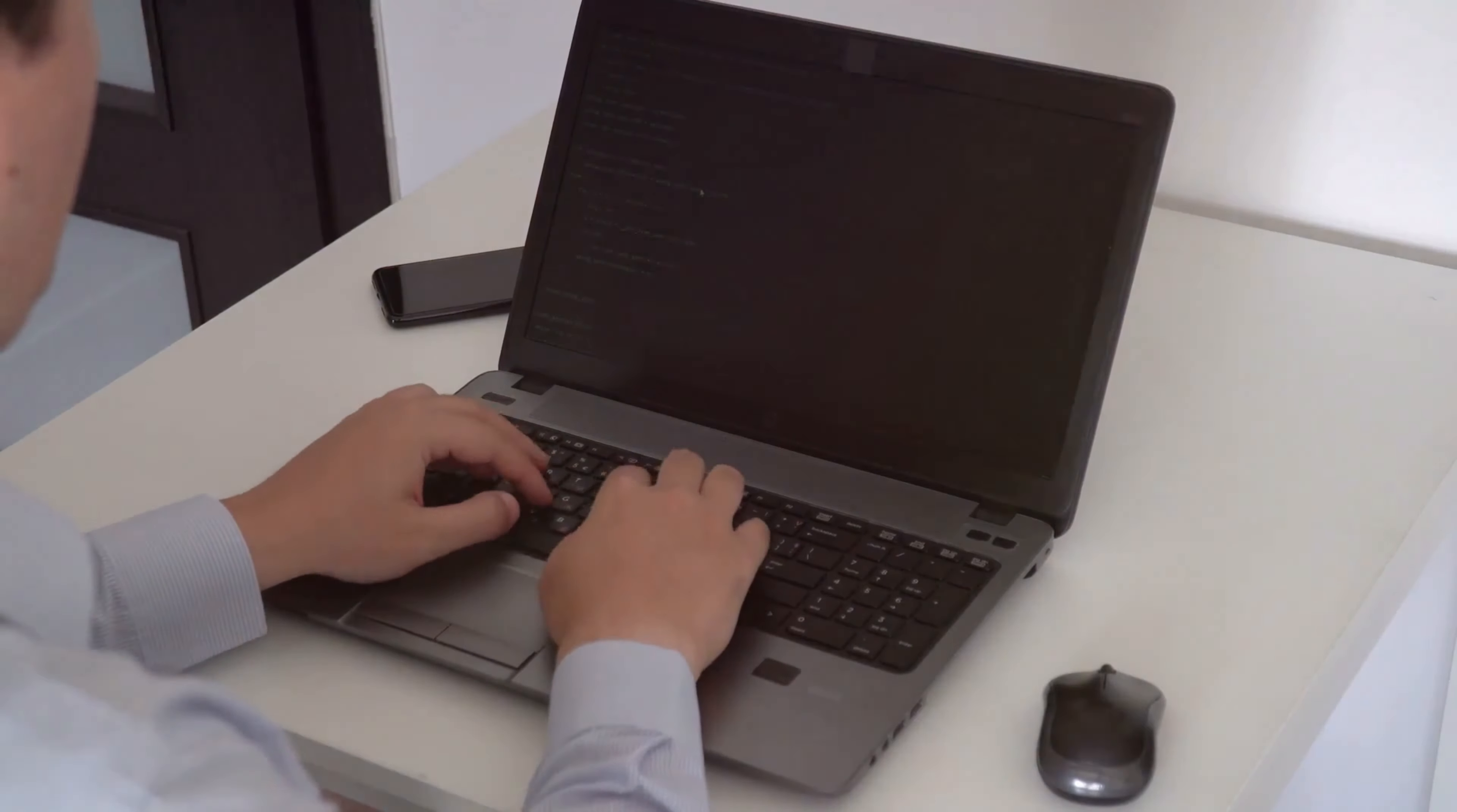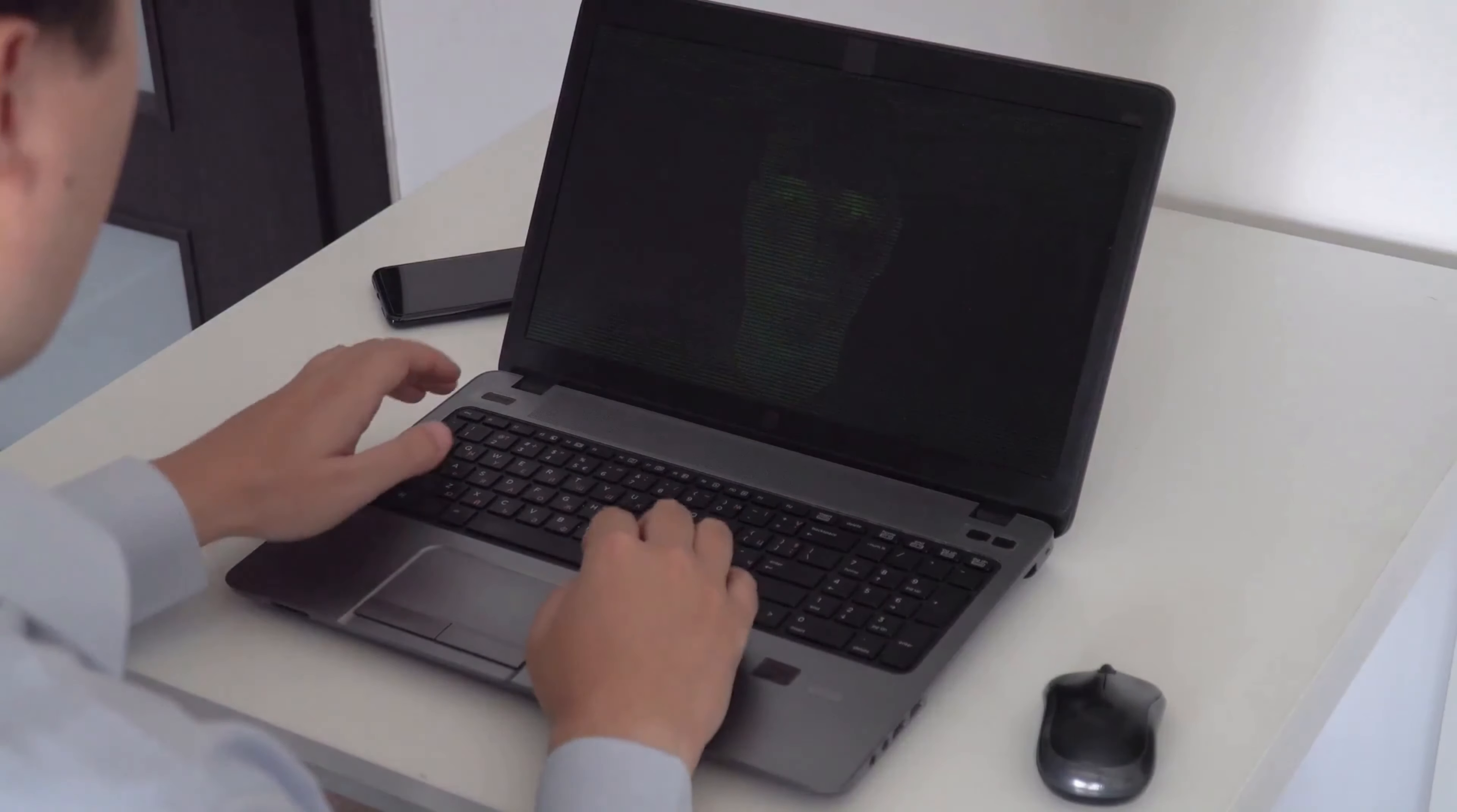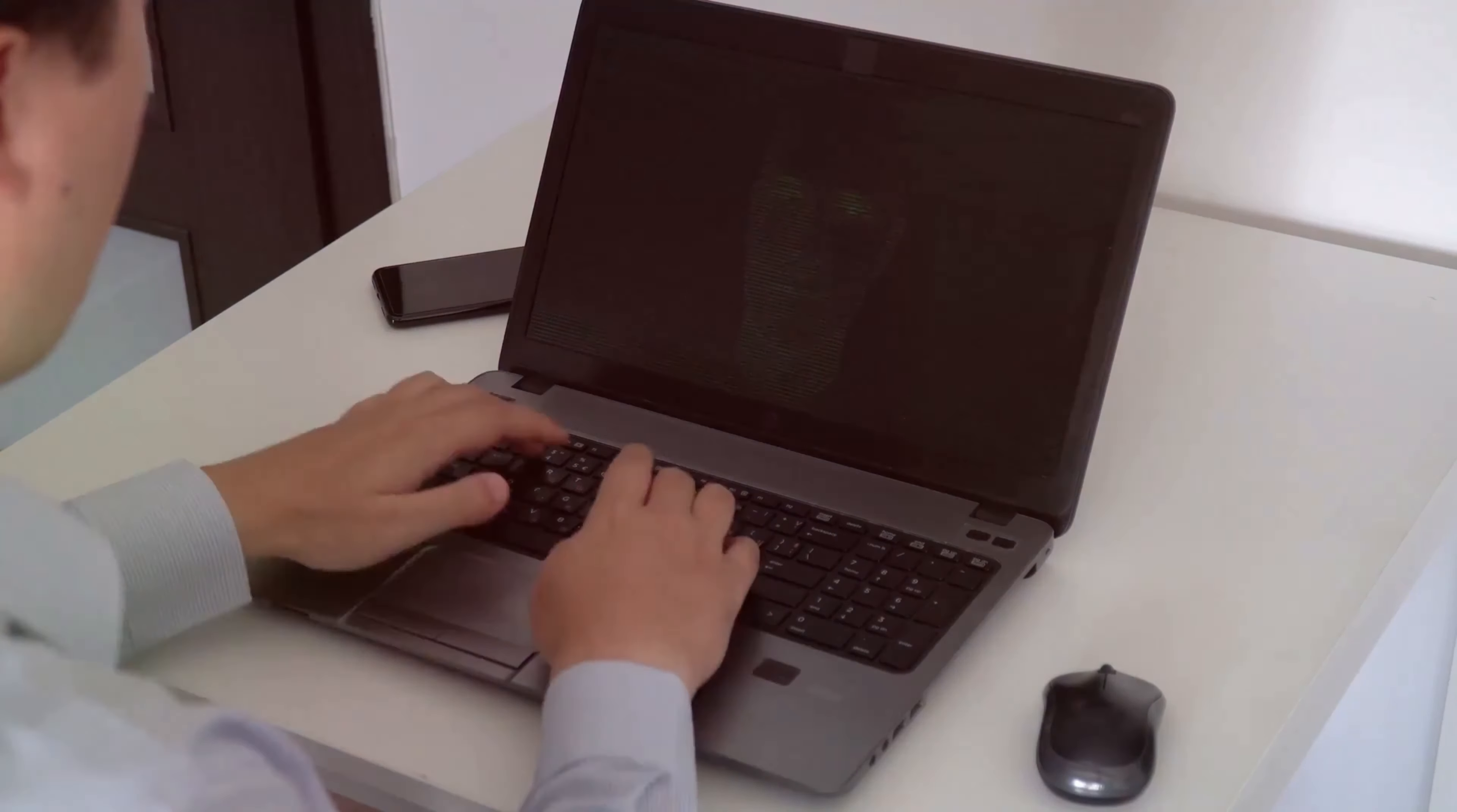But as we marvel at the wonders of deep learning, it's crucial to consider potential pitfalls. One major concern is ethics. As we entrust machines with more decision-making power, we must ensure they make fair and unbiased choices. Remember, a machine learns from the data it's fed. If that data reflects societal biases, the machine will inadvertently perpetuate those biases.